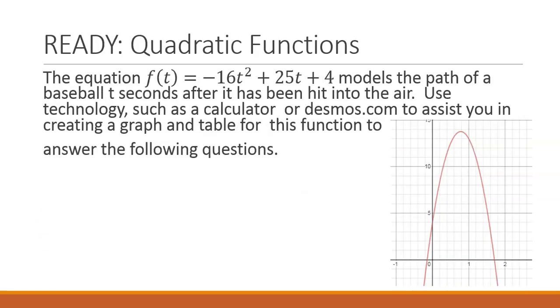We are given a quadratic function f of t equals negative 16t squared plus 25t plus 4, and we are modeling the path of a baseball t seconds after it has been hit into the air. We are asked to use technology such as a calculator or desmos.com to assist us in creating a graph and table for this function.